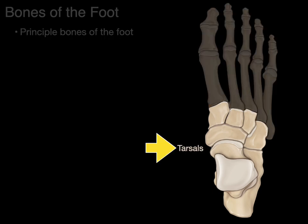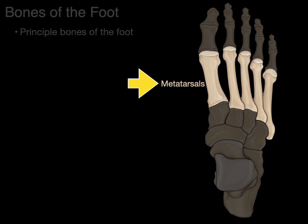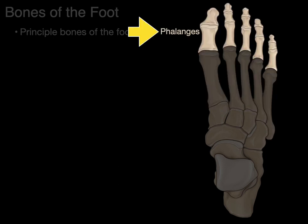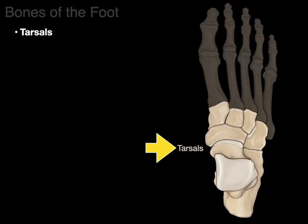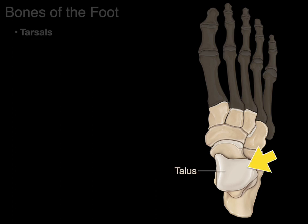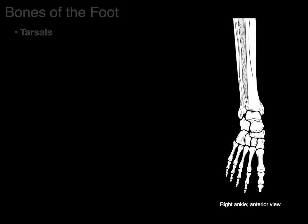The bones of the foot consist of tarsals, metatarsals, and phalanges. Let's take a look at each one of these and start with tarsals first. Tarsals is Latin for ankle, and there are seven tarsal bones. Let's talk about each one of them, starting with the talus. The etymology of talus is for slope or small hill, because that's what the top surface is formed like on the talus.